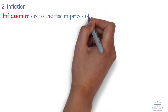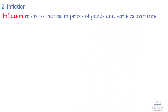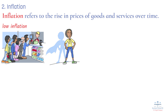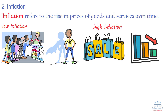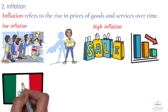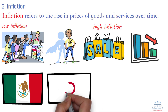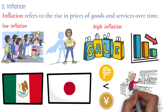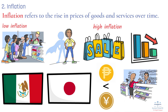Number 2: Inflation. Inflation refers to the rise in prices of goods and services over time. A country with low inflation typically sees its currency appreciate, because its purchasing power remains stronger compared to countries with higher inflation. On the other hand, high inflation erodes the value of a currency as its purchasing power decreases. For example, consider a scenario where the inflation rate in Mexico is significantly higher than that in Japan. Over time, the Mexican peso may weaken against the Japanese yen because the same amount of pesos buys fewer goods in Mexico than the same amount of yen buys in Japan.